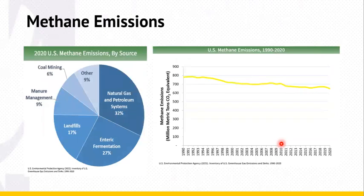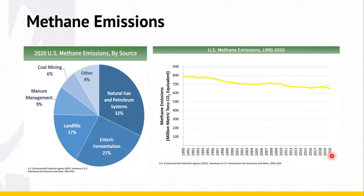For methane emissions, 32% comes from natural gas and petroleum systems. Methane emissions in the US decreased by about 17% between 1990 and 2020. During this time period, emissions increased from sources associated with agricultural activities, while emissions decreased from other sources including landfills, coal mining, and natural gas and petroleum systems.